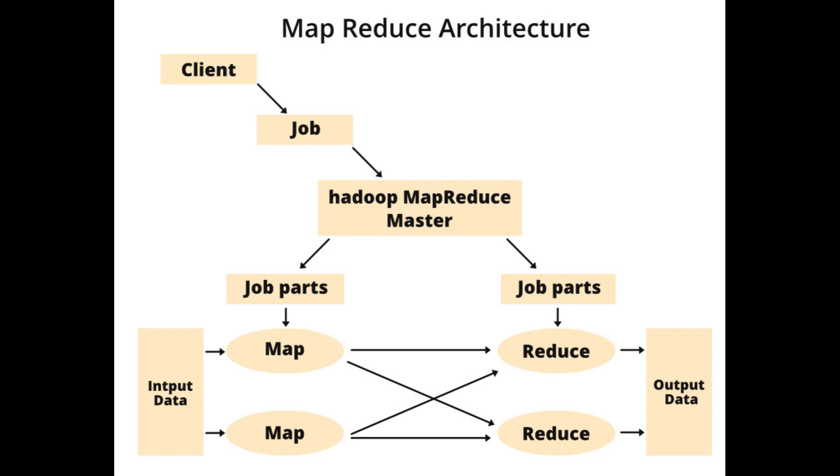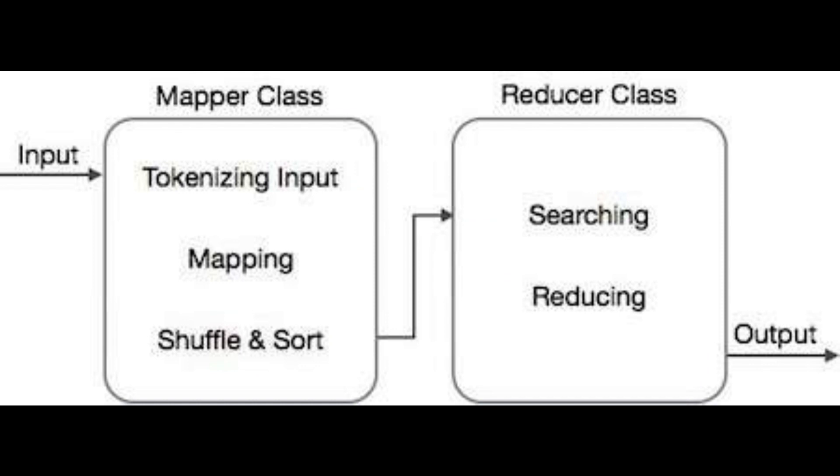The primary purpose of MapReduce is to allow developers to process vast amounts of data in a scalable and efficient manner across a cluster of computers. The MapReduce algorithm consists of two main phases: the Map Phase and the Reduce Phase. Here is how each phase works.